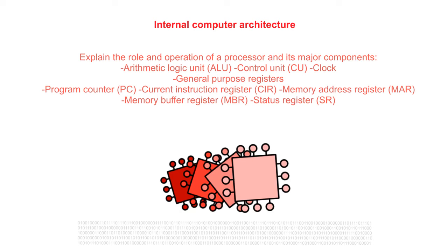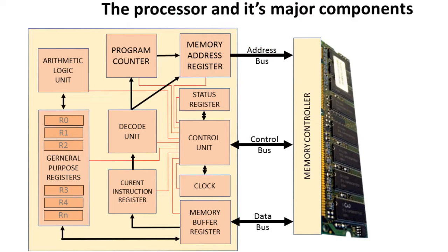In this set of videos we're going to be looking at the internal computer architecture. There's quite a lot to go through, so some of this material will be repeated in different forms across different videos. To start, this first video gives a quick overview of the main components inside a processor: the arithmetic logic unit, clock, general purpose registers, and more specific registers like the program counter, current instruction register, memory address register, memory buffer register, and status register.